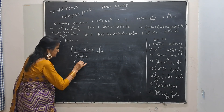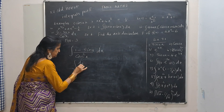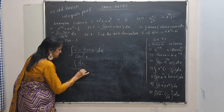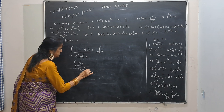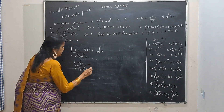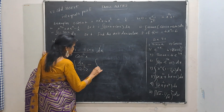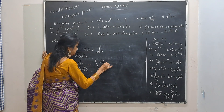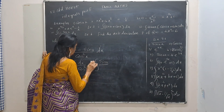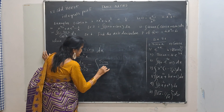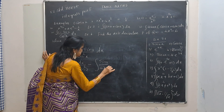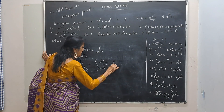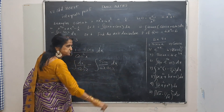Split: integral of dx by cos squared x minus integral of sin x by cos squared x dx, which I write as sin x divided by cos x into cos x dx.